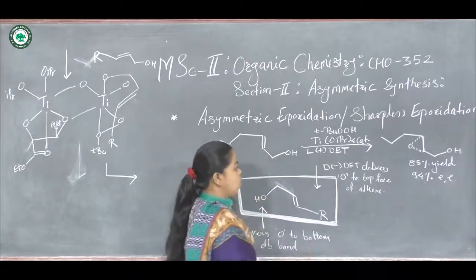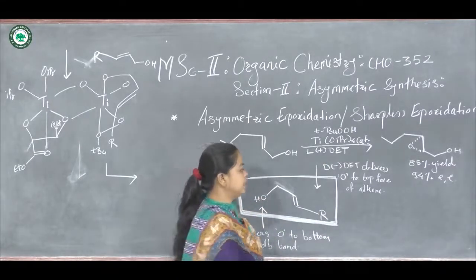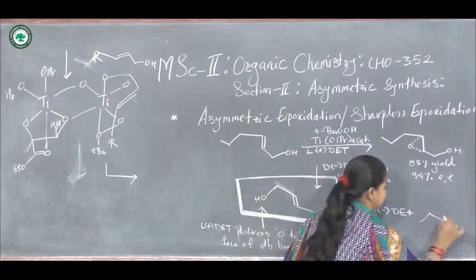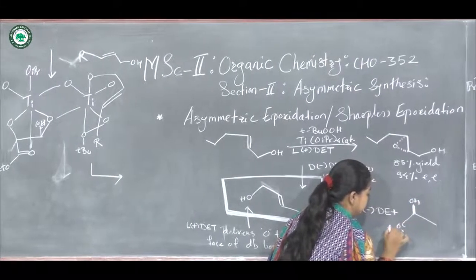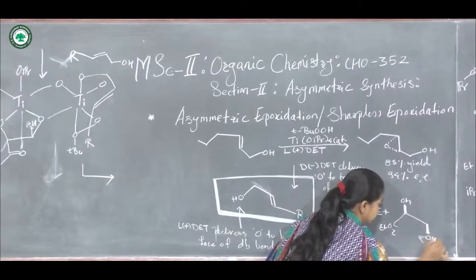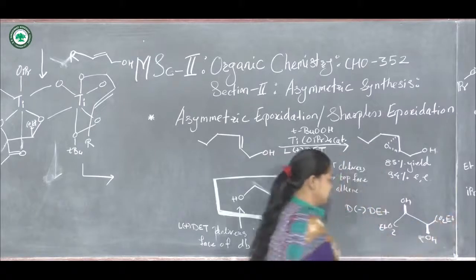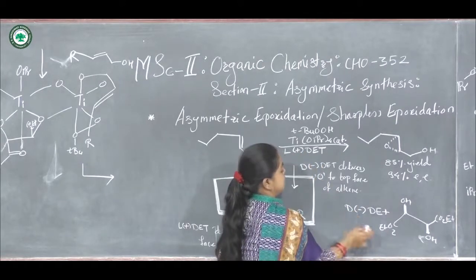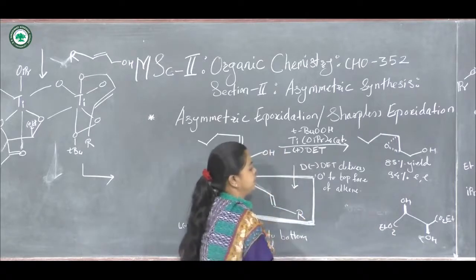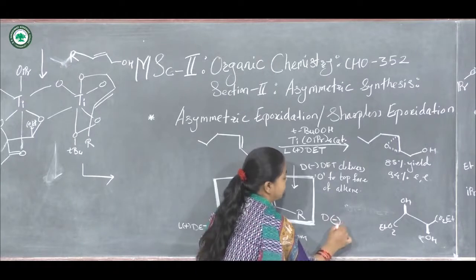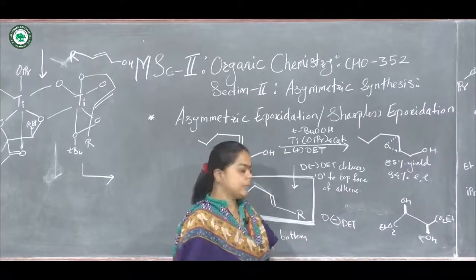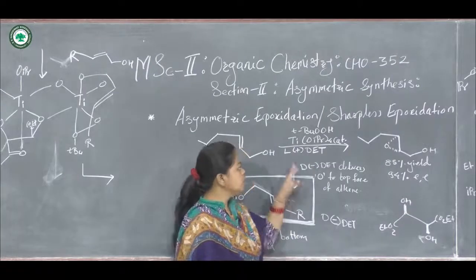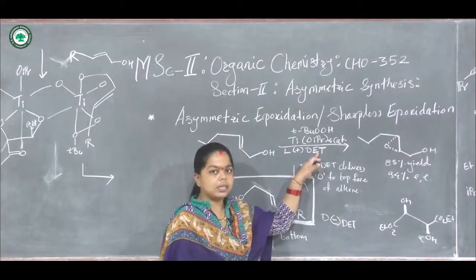The second reagent is L-plus or D-minus diethyl tartarate. The structure of diethyl tartarate: in D-minus diethyl tartarate, the OH groups are oriented downward — alpha-oriented. L-plus diethyl tartarate acts as the chiral ligand in this reaction.